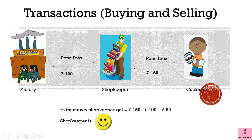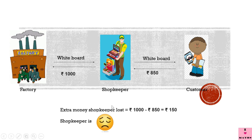One day the shopkeeper bought a pencil box from the factory for rupees 100 and sold the same pencil box for rupees 150. He got extra money — he bought it for rupees 100 but when he sold it he got rupees 150. The extra money he got is rupees 150 minus rupees 100, equal to rupees 50. He got extra 50 rupees and the shopkeeper is again happy.